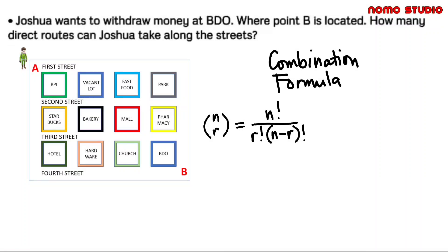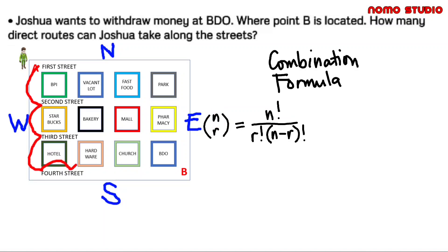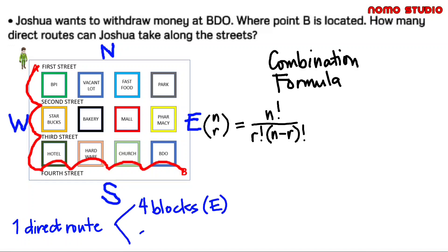Before that, let's put the four cardinal directions on the map. The letter N will be our total number of blocks going to point B. Counting the blocks: three blocks going south and four blocks going east, so our N is seven. To summarize, one direct route is equivalent to four blocks going east and three blocks going south. To find R, just select one from these two — either four blocks or three blocks — it will give the same answer. Note that wherever you go on the map from point A to point B, it will always give three blocks south and four blocks east.